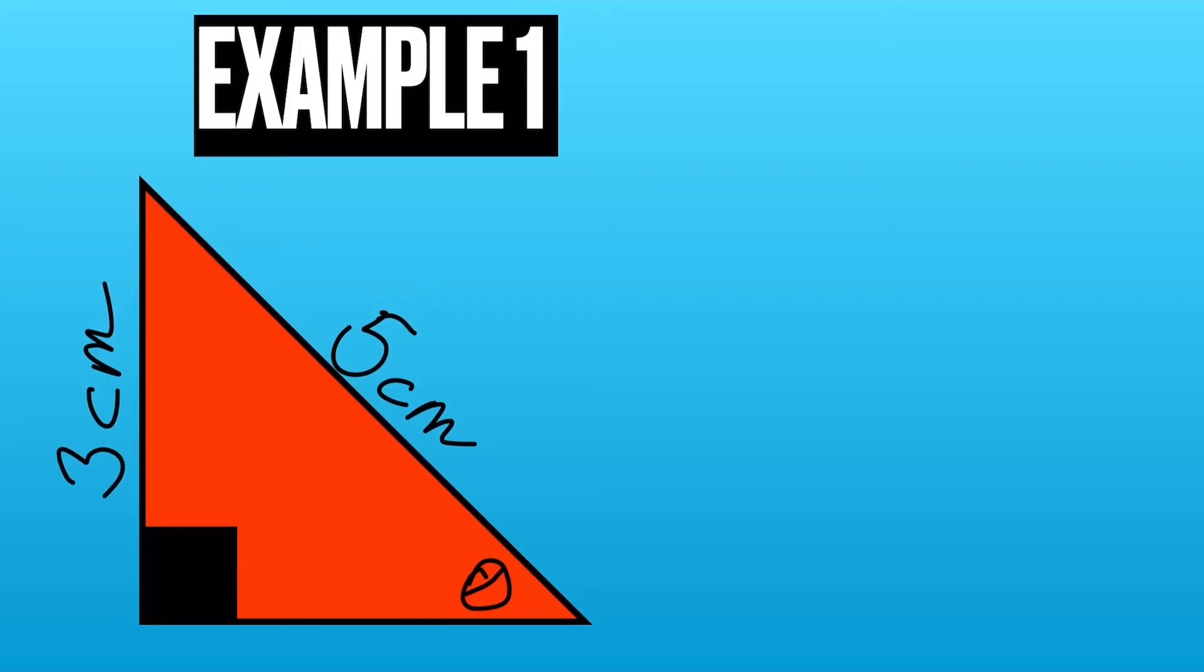Example 1. So we've got the opposite side is 3cm. The hypotenuse is 5cm because that's always opposite the right angle and adjacent is left. So we're using sine theta which is opposite over hypotenuse.